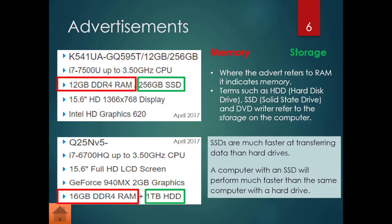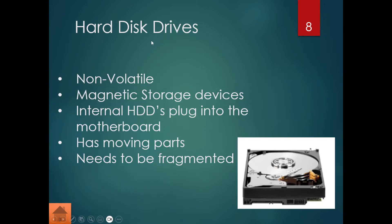Traditional hard disk drives — you can see the disks here, there's an actuator arm, and you can see there are two or three disks where all our data is stored. These drives are non-volatile, which means files and folders don't disappear when the power is switched off. They are magnetic storage devices; the internal hard drives plug into the motherboard, they have moving parts, they're always spinning, and they need to be defragmented from time to time.